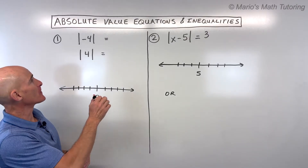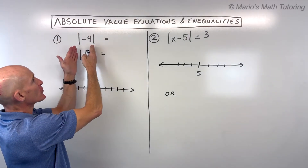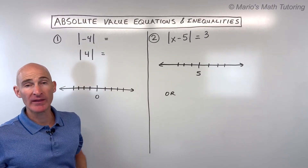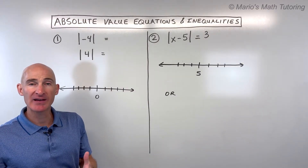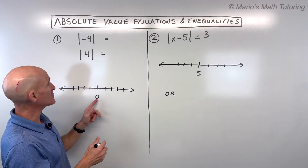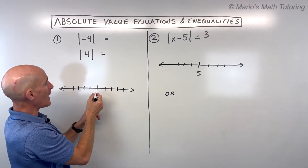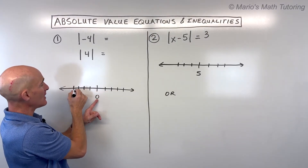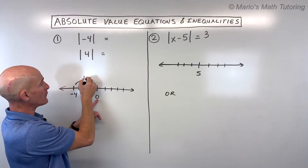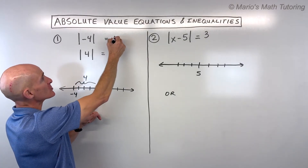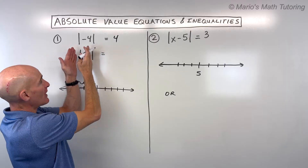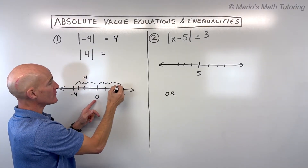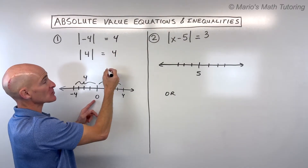The first example: we look at these vertical bars, which represent taking the absolute value. You can think about that as the distance from zero on the number line. Negative four — how far is that from zero? Four units to the left, so it's a distance of four units from zero, which means this equals four. Likewise, the absolute value of positive four is also four units from zero, so that answer is also four.